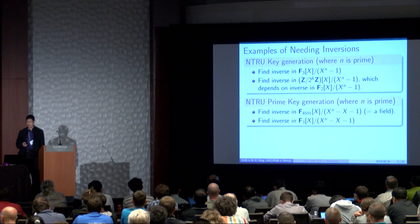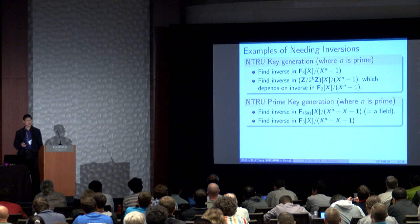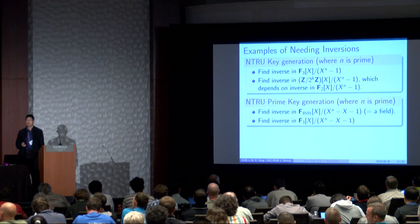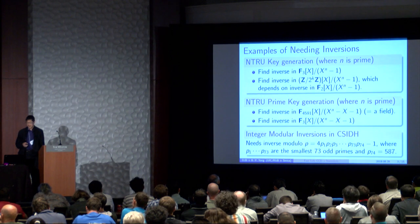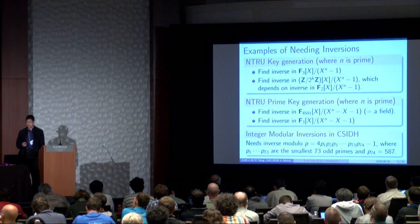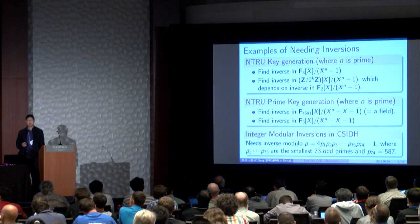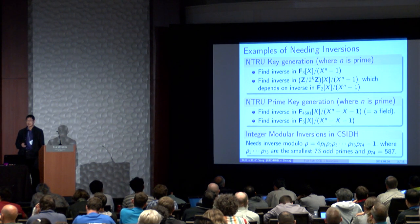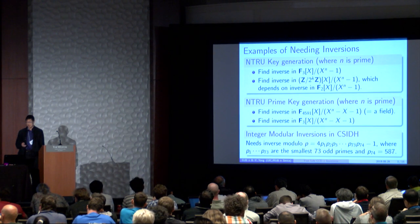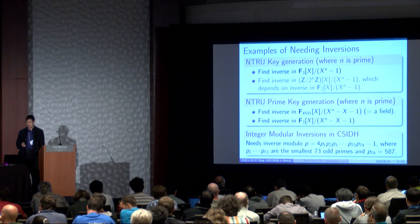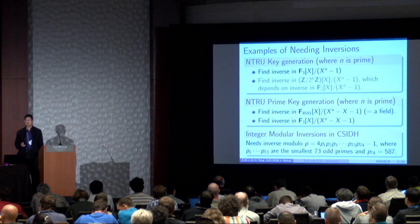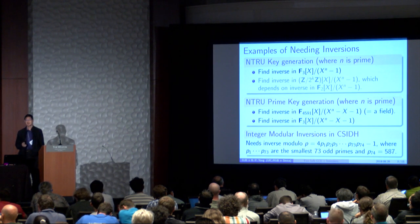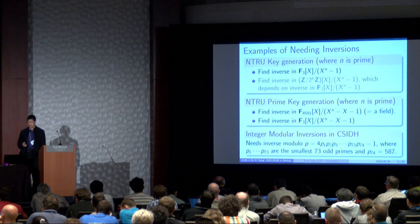And similarly, for NTRU prime key generation, that's another two different kind of inverses. And for example, in C-SIDH, there is an inverse modulo a 511 bit prime. And for all of these cases, except this particular case where the Fermat little theorem was too fast, we are able to improve the situation with our algorithm.